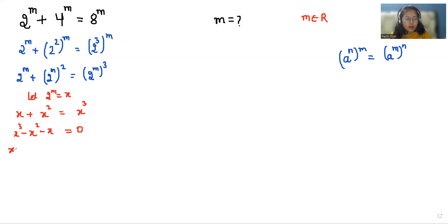Now if I take x as common, so x(x² - x - 1) = 0. Now we have 2 roots: either x = 0 or x² - x - 1 = 0.